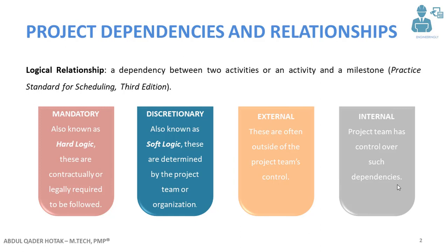As is very clear from its name, mandatory dependencies must be followed because either the contract or the law imposes them on the project. Discretionary dependencies, also known as soft logic, are determined by the project team or the organization itself, based on best practices in the field. In this situation, an activity could be sequenced with another activity in more than two ways, so the project team decides which way to choose.